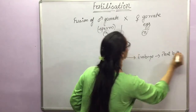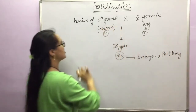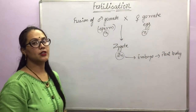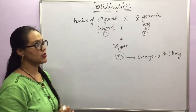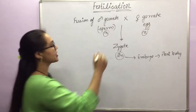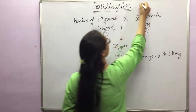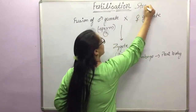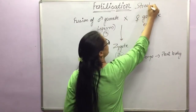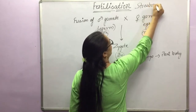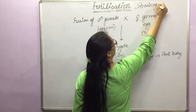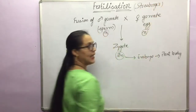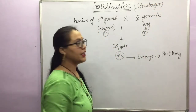This is fertilization. Fertilization in angiosperms was described by Strasburger in 1884.